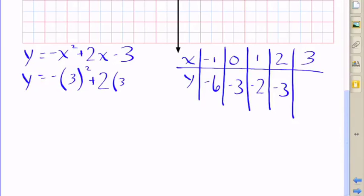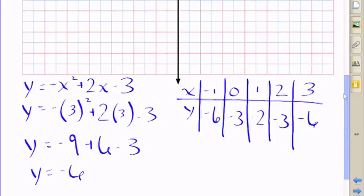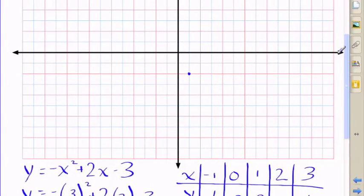Just subbing in 3 now as the value of x and after I evaluate here I have 3 squared and I take the opposite of that so it's negative 9. 2 times 3 is 6 minus 3, all that is negative 6. So when x is 3, y is negative 6.